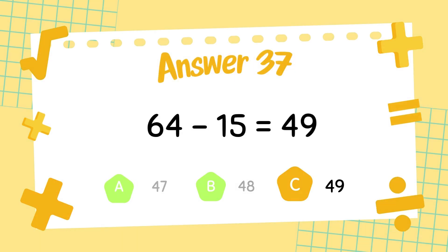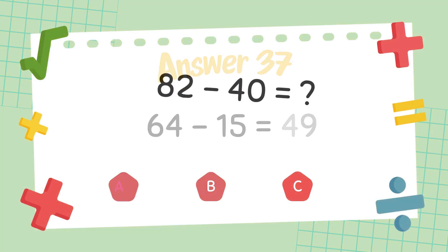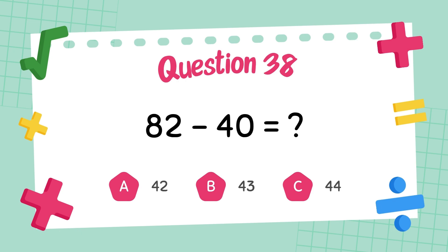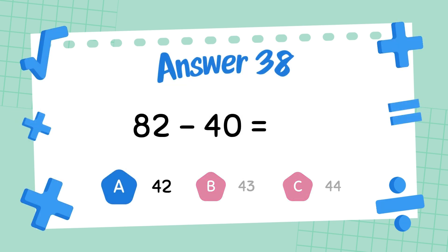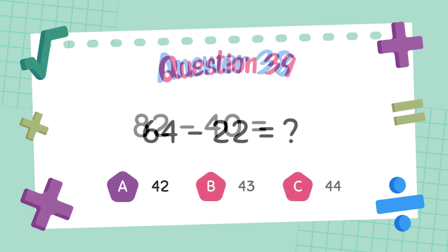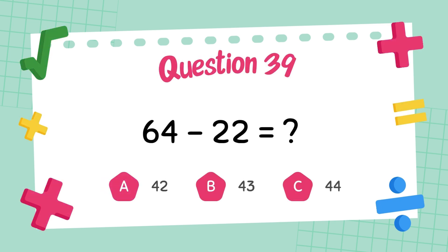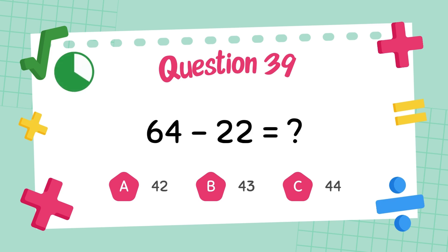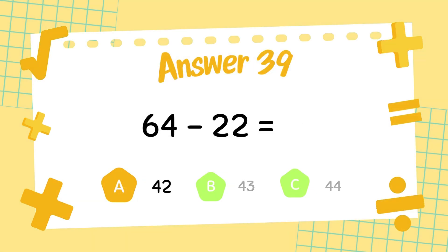The answer is forty-nine. What is ninety-seven minus forty? The answer is forty-two. What is sixty-four minus twenty-two? The answer is forty-two.